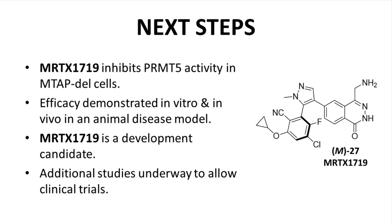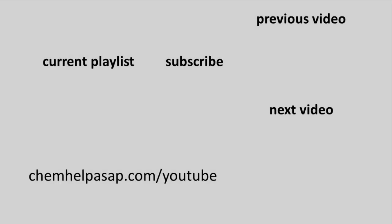Based on the discussed data, the research team gathered evidence that M27 inhibits PRMT5-dependent methylation in MTAP-deleted cells, based on both in vitro and in vivo studies. M27, also called MRTX-1719, was named a development candidate with the initiation of additional studies to allow clinical trials. These additional studies likely include preclinical safety and pre-formulation activities required to enable testing in the clinic. Thank you so much for watching all the way to the end of this drug discovery story. Please consider subscribing to the channel, leaving a like, or making a comment. Take care.